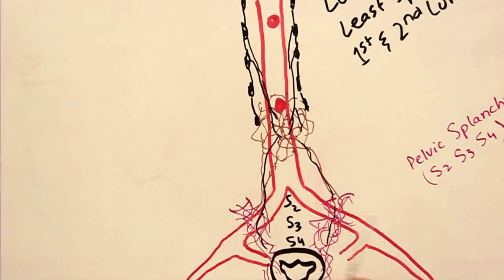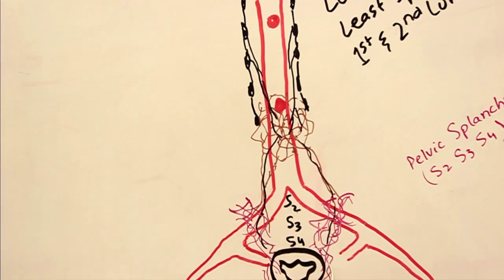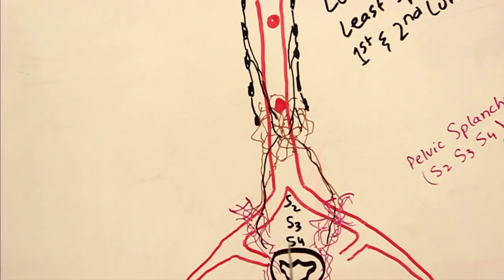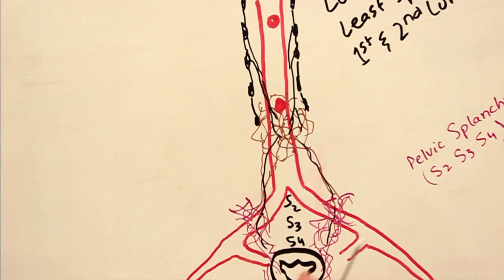Together they form the inferior hypogastric plexuses, and the vesicle plexus derives all its fibers through the inferior hypogastric plexuses. So the vesicle plexus is a blend of sympathetic and parasympathetic fibers.